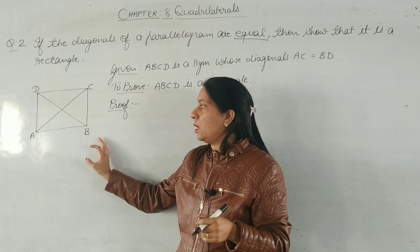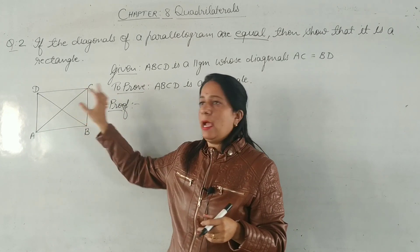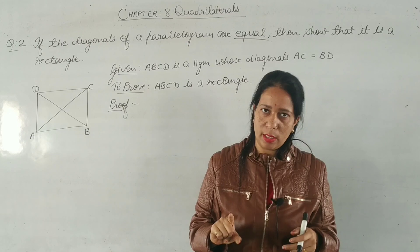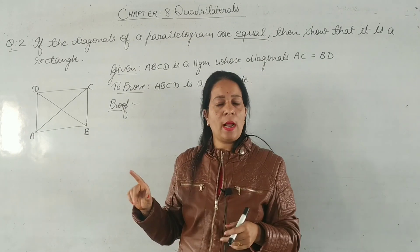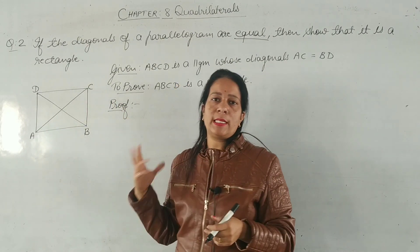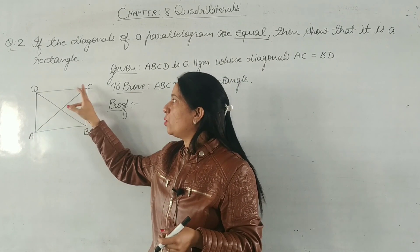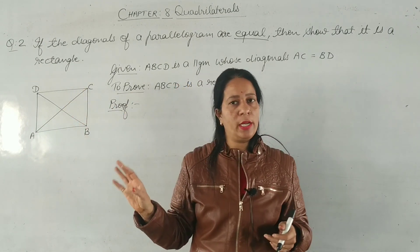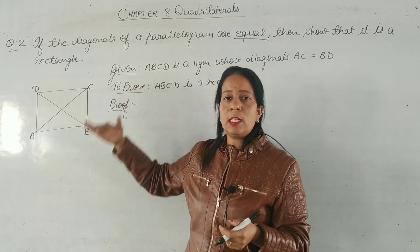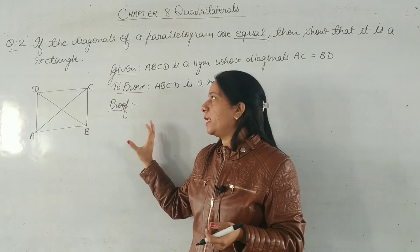The key difference is: in a rectangle all four angles are right angles, whereas in a parallelogram opposite angles are equal — meaning angle A = angle C and angle B = angle D. So if we can show these angles are right angles, then we can say ABCD is also a rectangle.